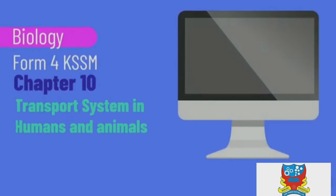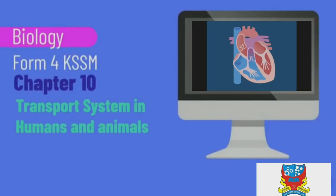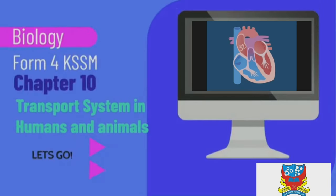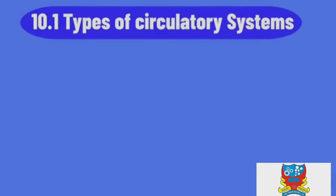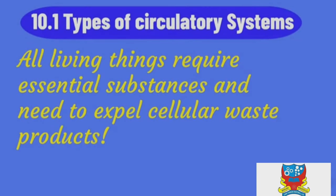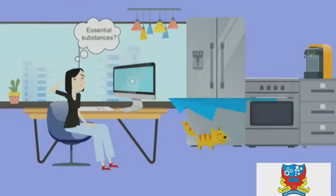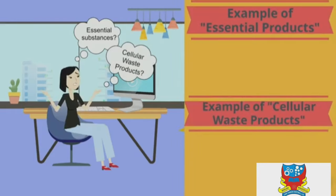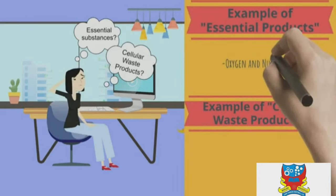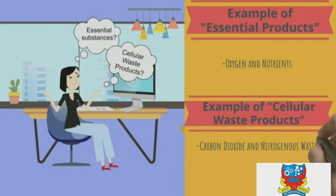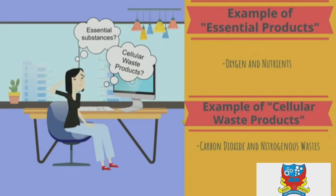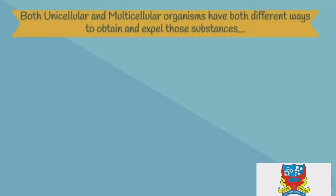Hello everyone, today we're going to be learning about Chapter 10: Transport System in Humans and Animals. All living things require essential substances and need to expel cellular waste products. Examples of essential substances are oxygen and nutrients. Examples of cellular waste products are carbon dioxide and nitrogenous wastes.